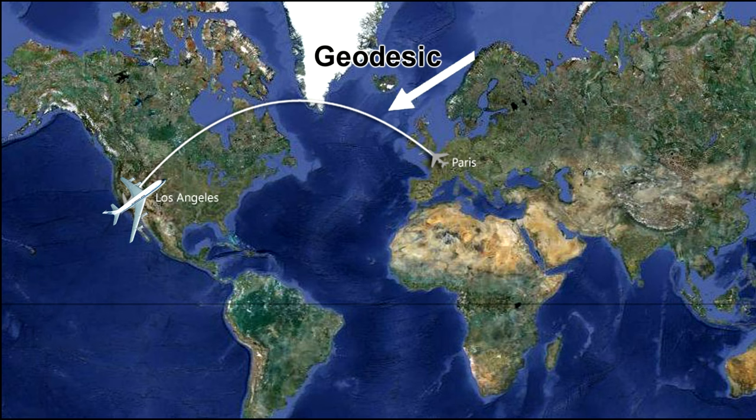This is why planes in the Northern Hemisphere travel north and then back south to get to a destination at the same latitude rather than travel due west or due east. They have chosen the shortest distance between the two points to save on both time and fuel. Some geodesic routes can save up to 1,000 kilometers.